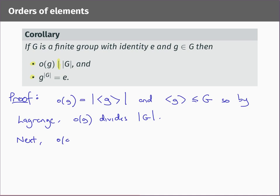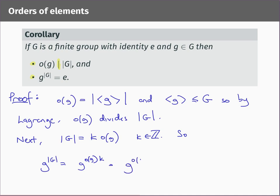We now know that the order of g divides the order of the group, so let's say the size of the group equals some multiple k of the order of g. Then g to the power of the size of the group is g to the power ord(g) times k. By exponent laws, that is (g to the power ord(g)) all to the power k. But g to the power of its order is the identity — that's part of the meaning of order — so we get the identity to the power k, which is just the identity again. This proves the second part of the corollary.